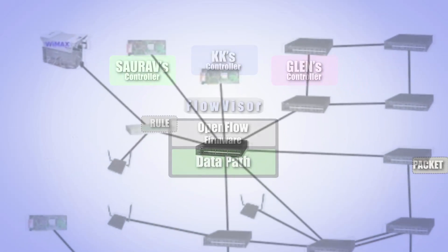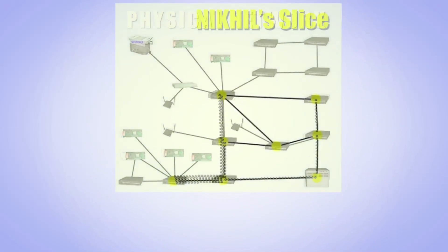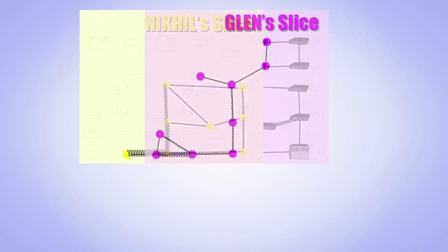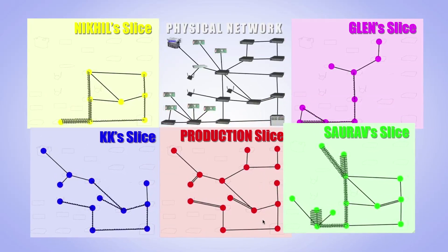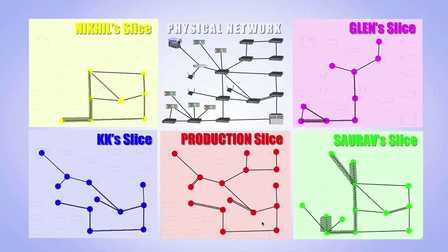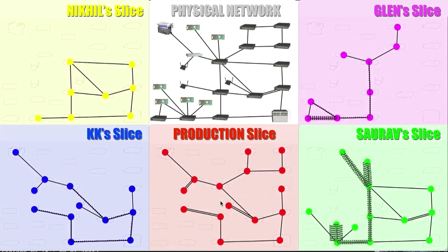So, if we use FlowVisor to slice every switch and router in our network, we can create logical copies of the same physical network. This allows potentially faulty experiments to run alongside existing production network services. In other words, FlowVisor will allow researchers and network operators to try out new ideas on their real networks without interfering with its normal day-to-day operations.